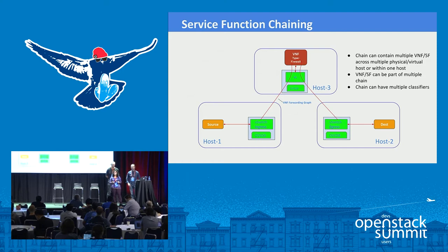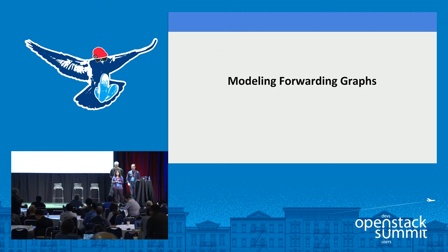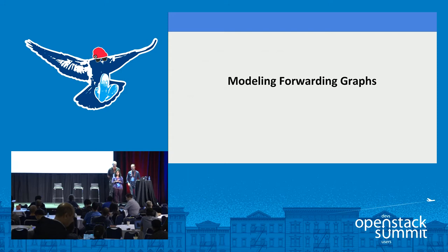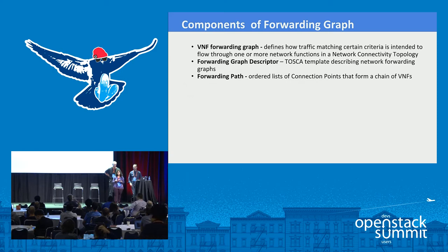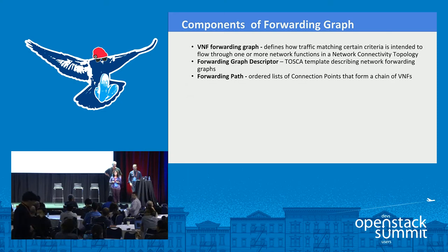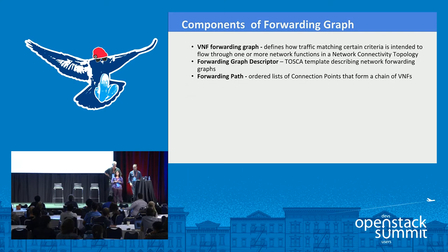How do we model forwarding graphs using the TOSCA data model? There are three main elements defined by ETSI. The first is the VNF forwarding graph, which defines how traffic meeting certain criteria needs to be steered through network functions in a given topology. The second is the forwarding graph descriptor, the main TOSCA template used to represent SFC policies. And finally, the forwarding path, which is an ordered list of connection points belonging to VNFs in the forwarding graph. A forwarding graph can have more than one forwarding path.